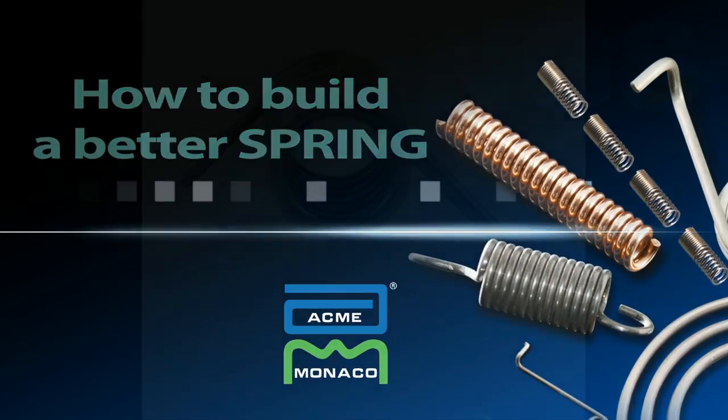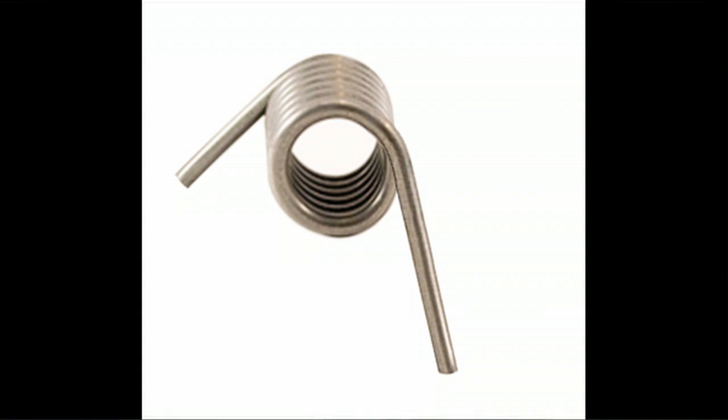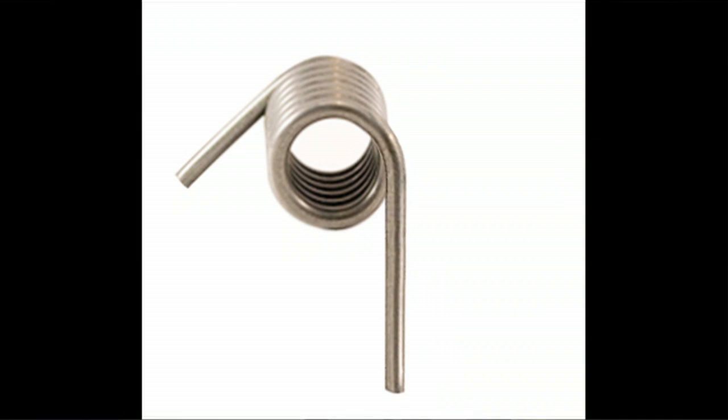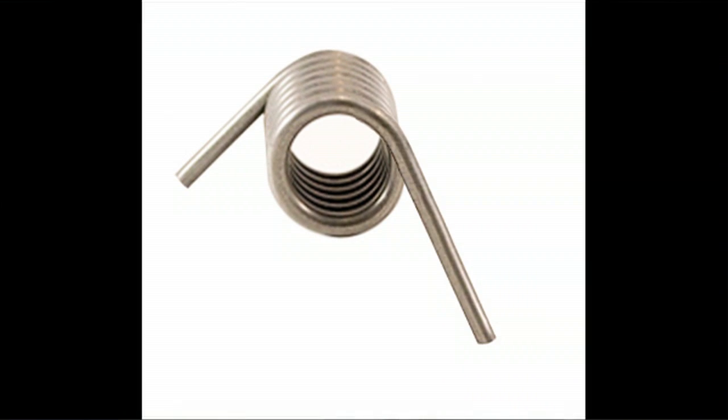The next spring type are what we call torsion springs. They're different from compression and extension springs — instead of compressing and pulling, what you're doing is turning. You're turning the legs, producing a torque which generates a force.